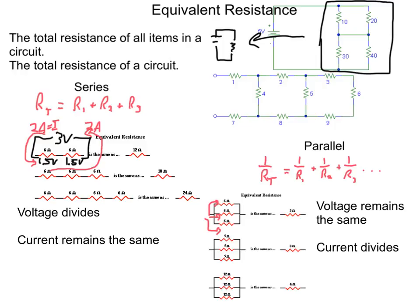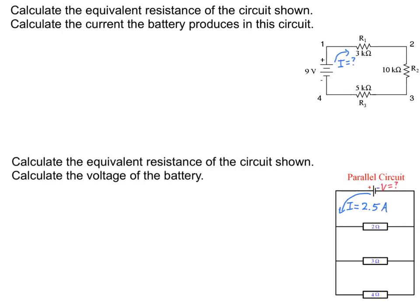Voltage drop, though, I should point out, remains the same. So if this thing is connected to a 3-volt power supply, 3 volts is going to drop across each and every one of these. So while current divides in parallel, voltage drop remains exactly the same across them.